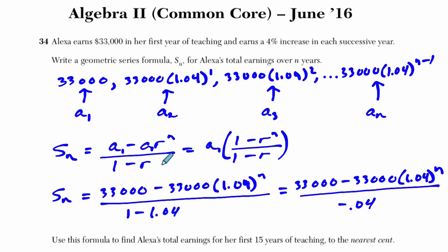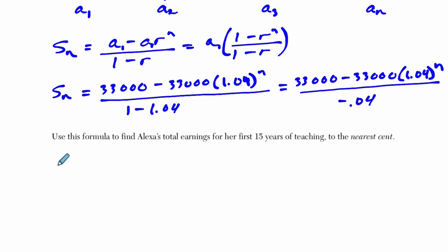So this is our general formula, and now we want to find out what happens in the first 15 years of teaching. Let's just go through the mechanics of that. That means n is 15. So on the calculator, we just got 33,000 minus 33,000 times 1.04 to the 15th over 1 minus 1.04.